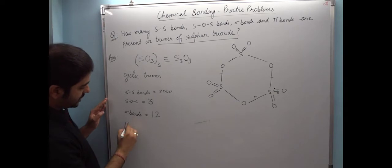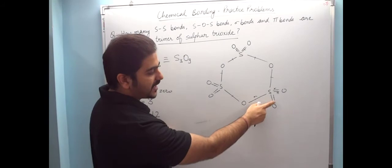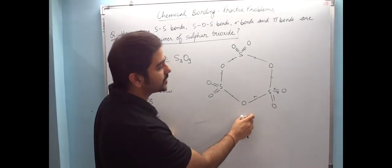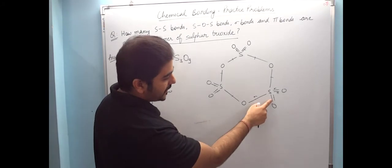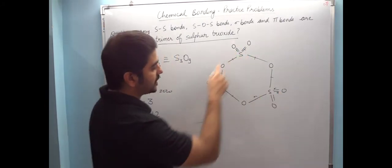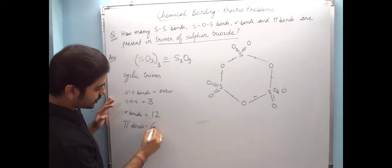Then pi bonds. Pi bonds means that in a double bond, the first bond is sigma and the second is pi. And here there is no pi because it's a single bond. So here 1, 2, 3, 4, 5, 6. So as many double bonds there are, that many pi bonds will be there. The answer is six.